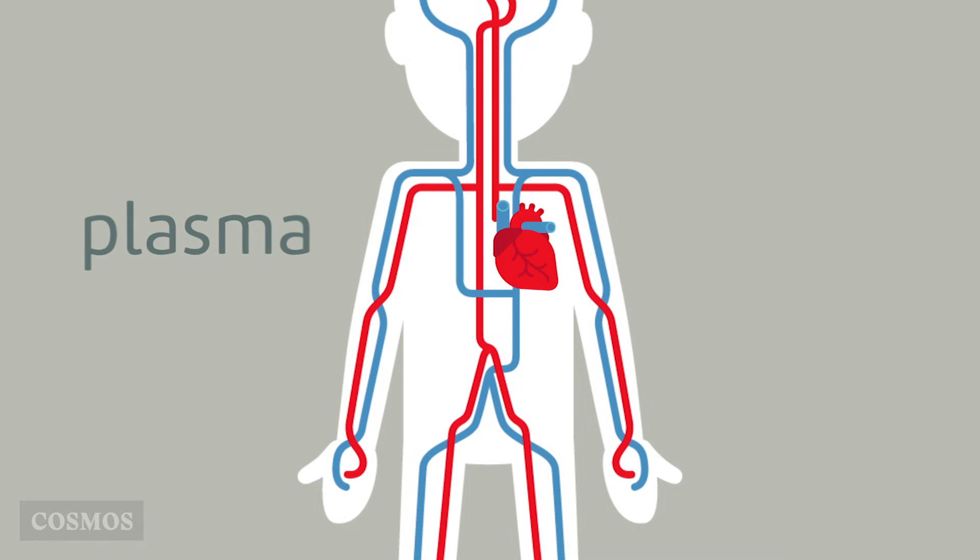The plasma in blood is a water-based solution too. It carries solutes such as salt, sugar and proteins around the body to where they're needed.